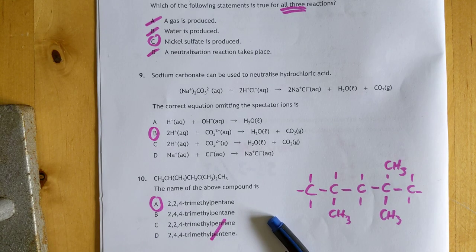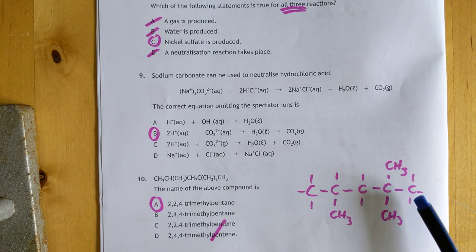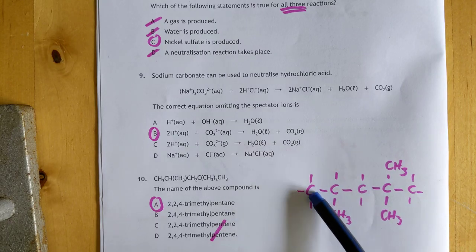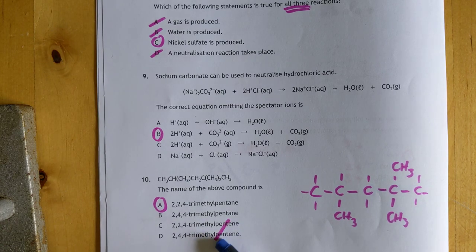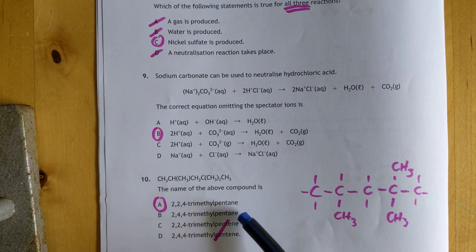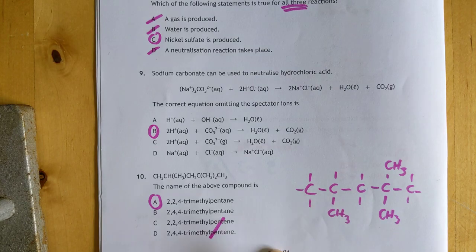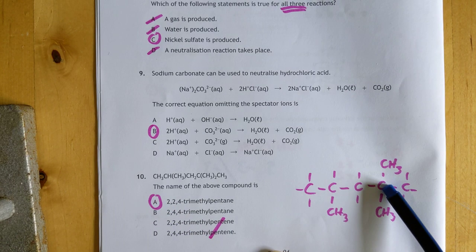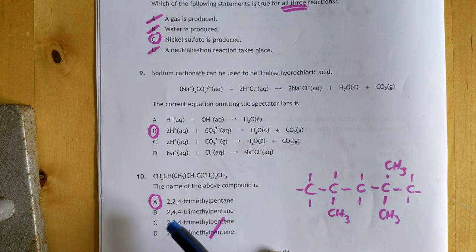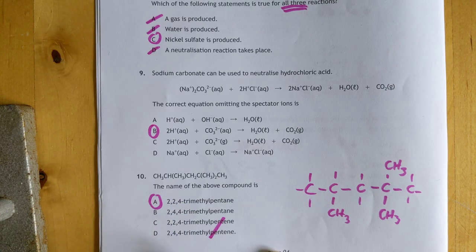The name of the above compound: I had to draw it out for clarity. It's got one, two, three, four, five carbons, all single bonded. So the pentanes are out. It's something pentane. You number them so the numbers are always the smallest. This becomes two, two, four trimethyl pentane, not two, four, four trimethyl pentane.